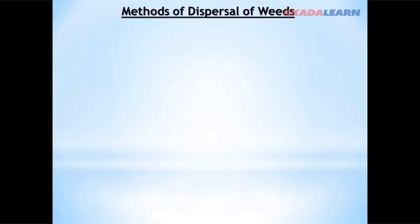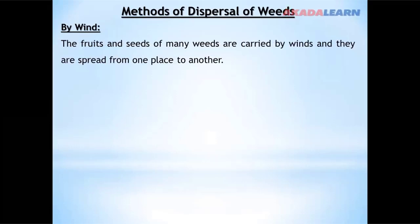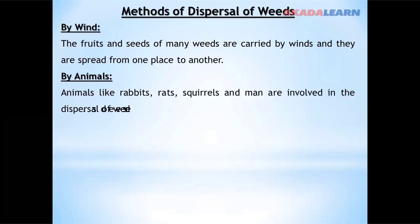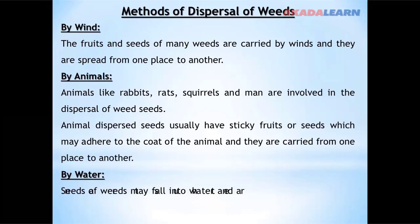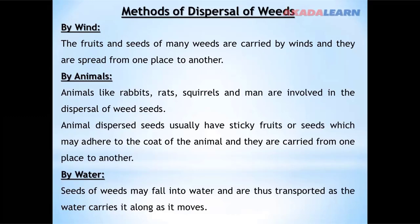Methods of dispersal of weeds: Weeds can be dispersed by wind — the fruits and seeds of many weeds are carried by wind and spread from one place to another. They can also be dispersed by animals such as rabbits, rats, squirrels, and man. Animal-dispersed seeds usually have sticky fruits or seeds which adhere to the coat of animals and are carried to new locations. Weed seeds can also be dispersed by water — seeds may fall into water and be transported as the water carries them along.